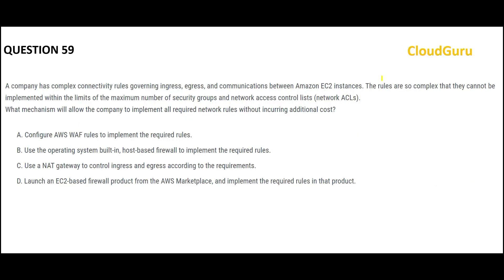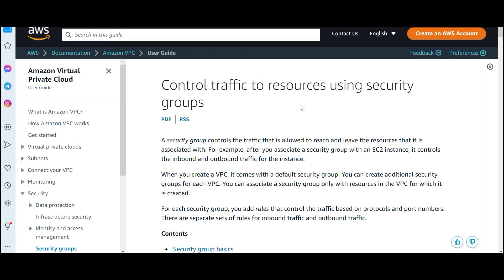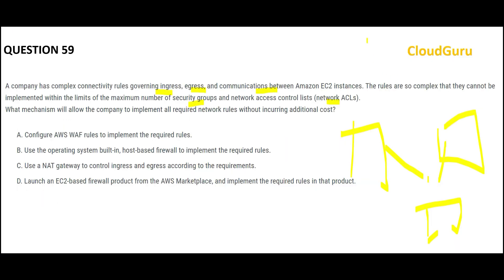You have multiple EC2 instances and you have ingress, egress, and combinations between EC2 instances. For example, you have so many EC2 instances and they have to communicate with each other. The rules are becoming so complex and they cannot be addressed by security groups or network ACLs. Normally, using security groups we are able to control the traffic to the resources, but there is a limit to it and that limit has been crossed.